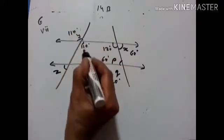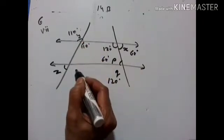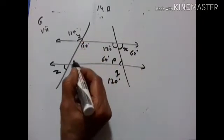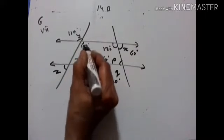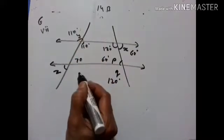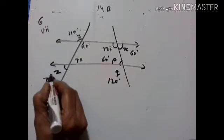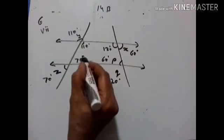Vertically opposite angles — therefore Y is equal to 110. If this is 110, this is 70 — co-interior angles are supplementary. This is 70, so Z is equal to 70 degrees — vertically opposite angles.